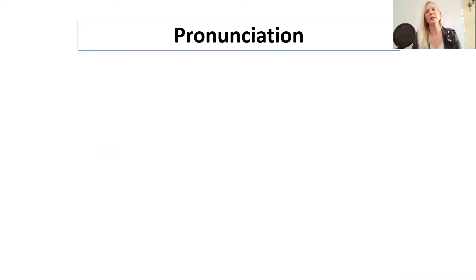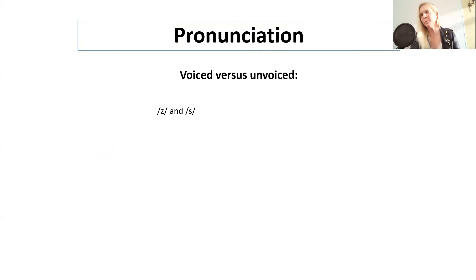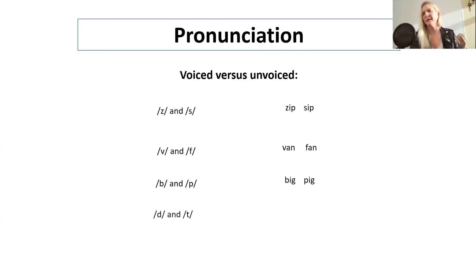Pronunciation — always a tricky one for everyone across the world because we all have very different accents. However, if you can master the voiced versus the unvoiced sounds, this will really help you. For example: z and s — zip and sip; v and f — van and fan; b and p — big and pig.